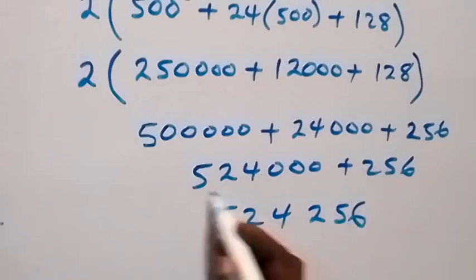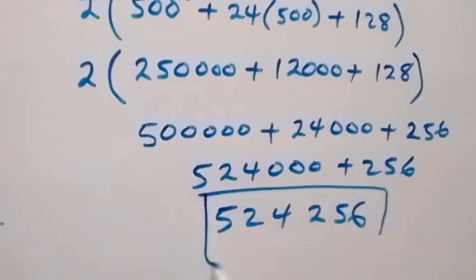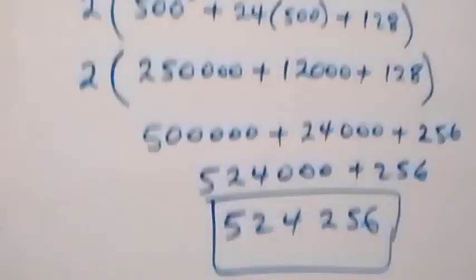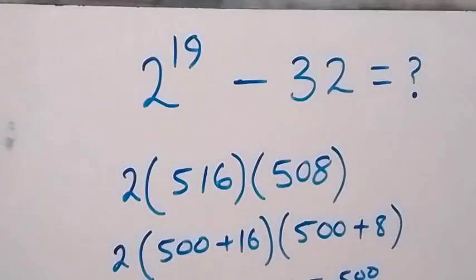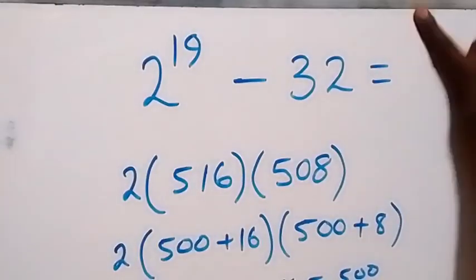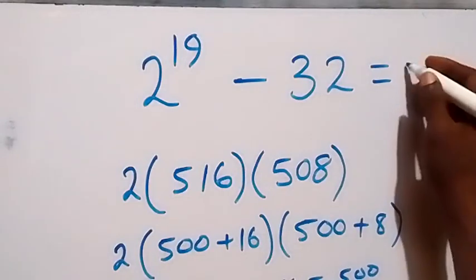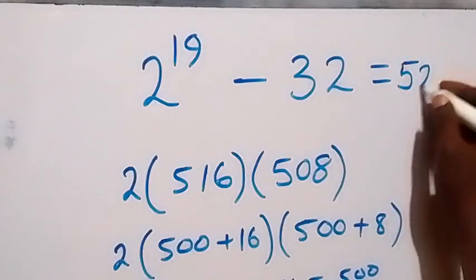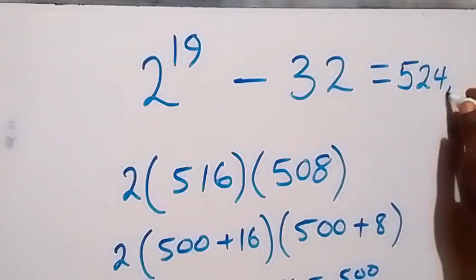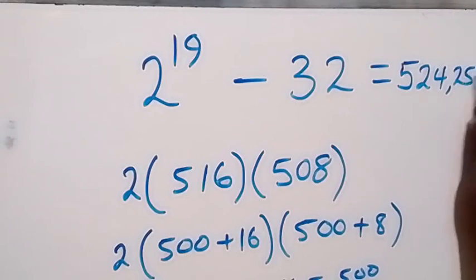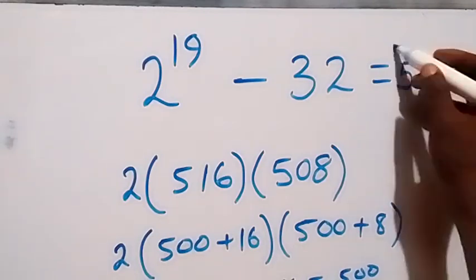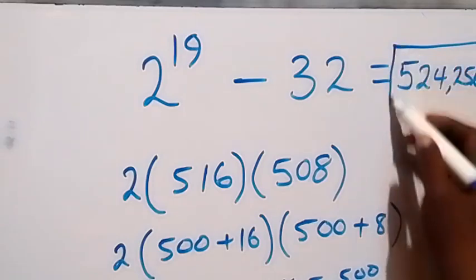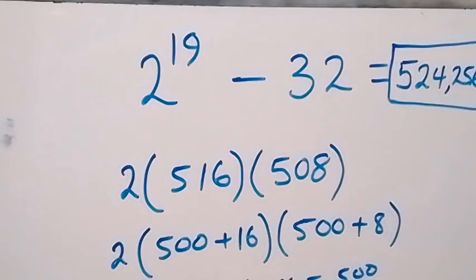So here we have the solution to the given problem. Without using a calculator, we have 2 raised to power 19 minus 32 equals 524,256. Thank you for watching. Don't forget to subscribe to my channel and turn on the notification bell. See you next time, bye for now.